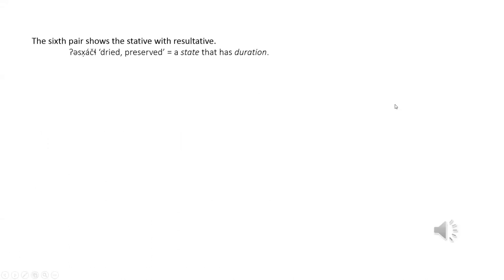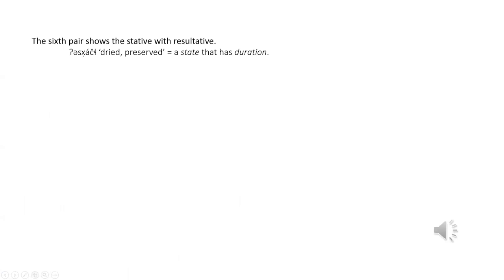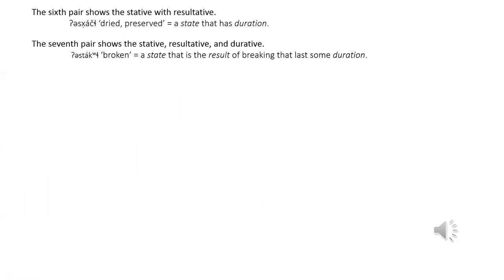The sixth pair shows the stative with the durative. For example, the word meaning 'dried or preserved' refers to a state that has duration. The seventh pair shows the stative, resultative, and durative all in the same word. The example meaning 'broken' is a complete state, is the result of breaking, and lasts some duration.